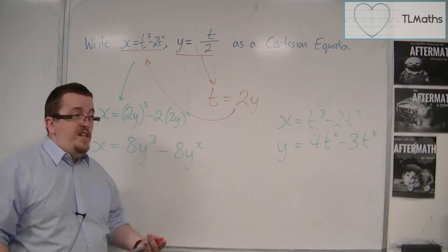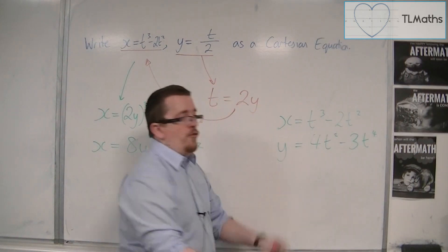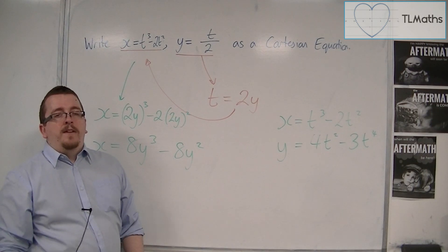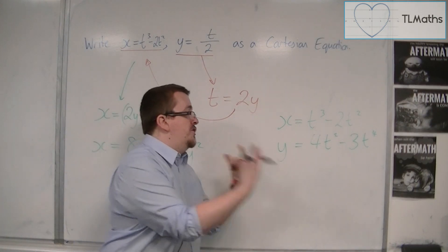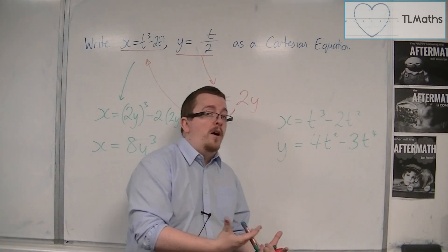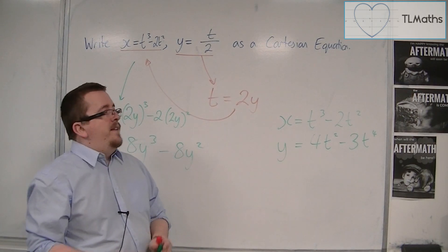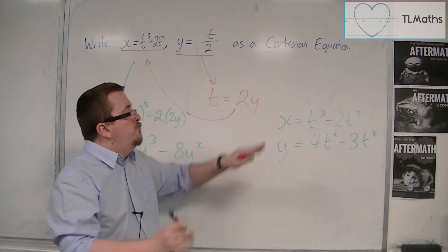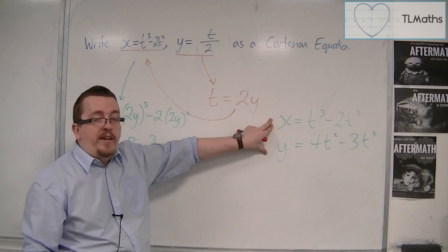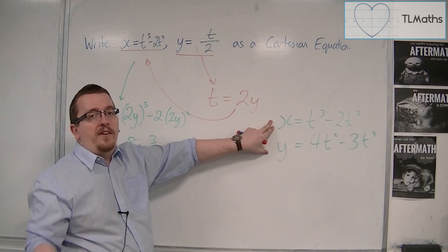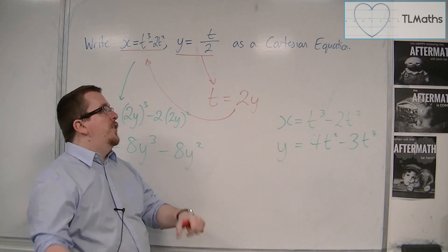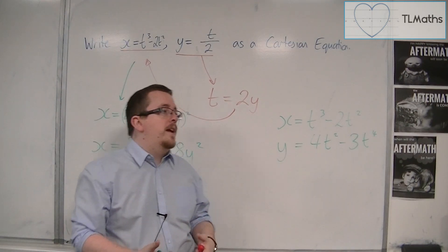there will be no way of me rearranging either of those two equations to get t is equal to just a function of x or just a function of y to substitute into the other. There would be no way of writing these as a single Cartesian equation. So there are limits on the algebra